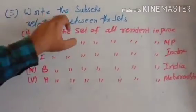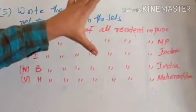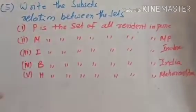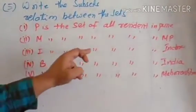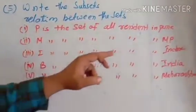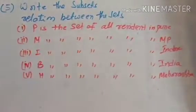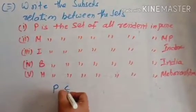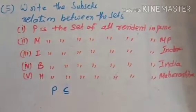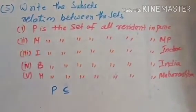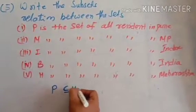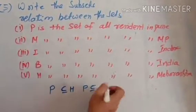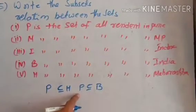Question number 5: write the subset relation between the sets. P is the set of all residents in Pune, M is the set of all residents in Madhya Pradesh, I is the set of all residents in Indore, B is the set of all residents in India, and H is the set of all residents in Maharashtra. P is a city of Maharashtra, and Maharashtra is a state of India. Therefore, P is a subset of H, and P is a subset of B.